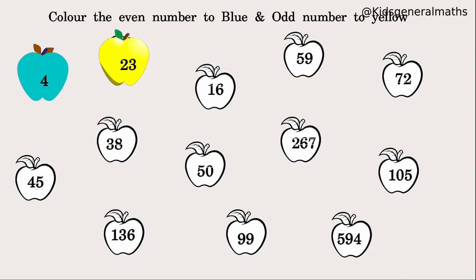Next, 16: the last digit is 6, which is an even number, so 16 is an even number — colour it blue. Next, 59: the last digit is 9, which is an odd number, so 59 is an odd number — colour it yellow.